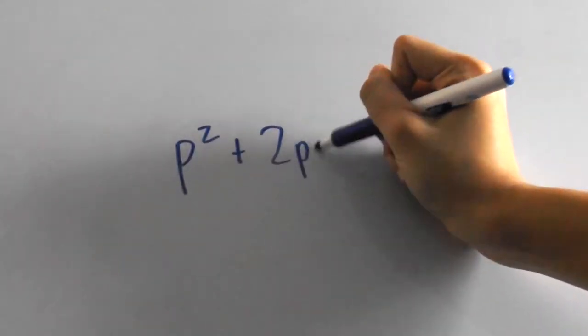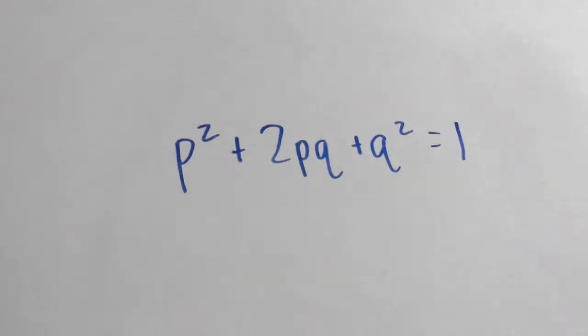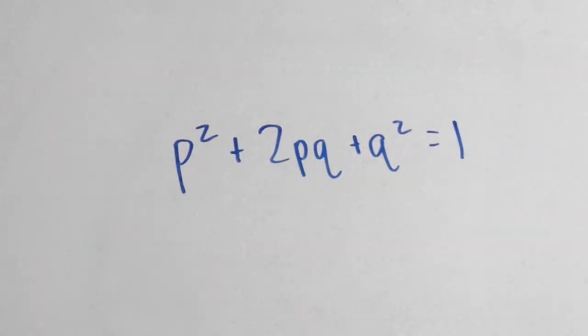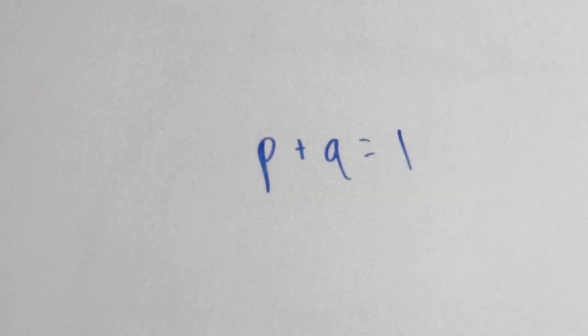Here's the Hardy-Weinberg equation. So you'll see here that we have p squared plus 2pq plus q squared equals 1. Another part of the equation is the fact that p plus q equals 1. See how both of these equations equal 1?